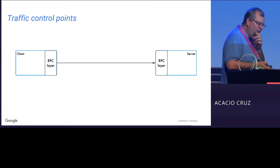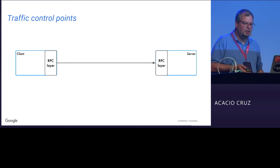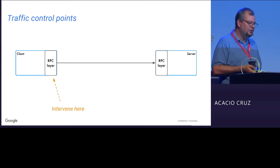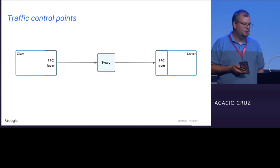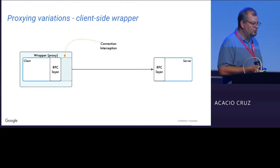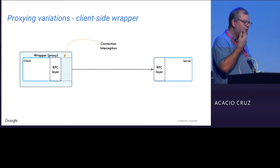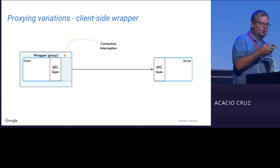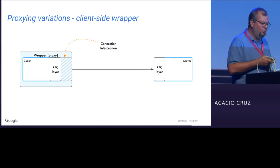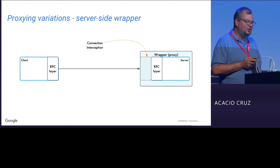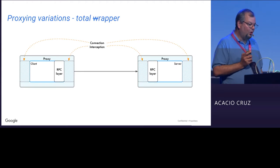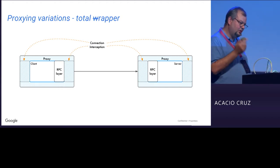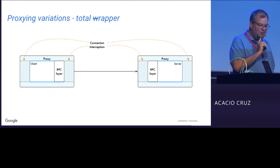On to techniques. Abstractly, when a client connects to a server, there are only a few points where you can intervene: on the client side, on the server side, or via a proxy in between. You can also proxy-wrap the client side without changing code, or wrap the backend as a system-level wrapper. Or you can go all in and wrap both the inbound and outbound on the frontend and the outbound on the backend.